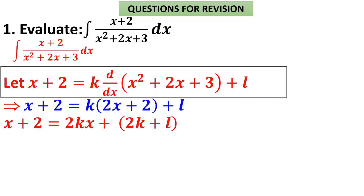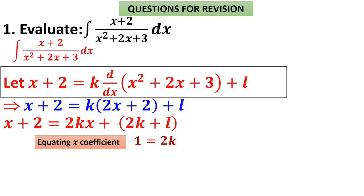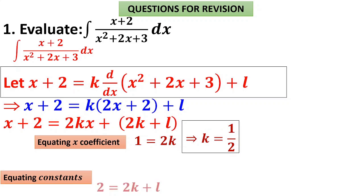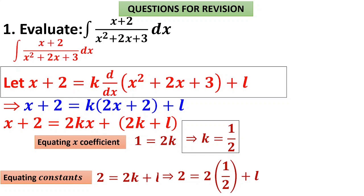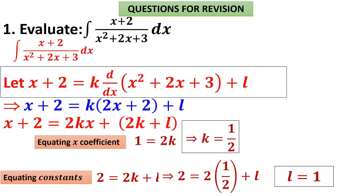To evaluate k and l, collect the x-term and constant term separately. The x coefficient on the right-hand side is 2k, and the constant is 2k+l. Equating x coefficients: left-hand side is 1, right-hand side is 2k, so k = 1/2. Equating constants: 2 = 2k+l = 1+l, therefore l = 1.